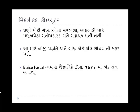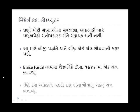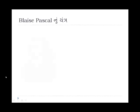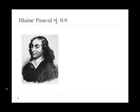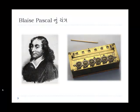1642 માં પાસ્કલ નામના વૈજ્ઞાનિકે એક યંત્ર બનાવ્યું. તેમણે 10 આંકડા ને બદલે 10 દાંતા વાળું ચક્ર નું યંત્ર બનાવ્યું. આ Blaise Pascal છે અને આ તેમનું યંત્ર છે – 10 દાંત વાળા ચક્ર દ્વારા ગણત્રી થઈ શકતી.